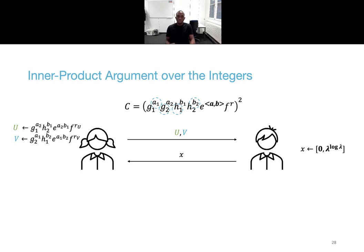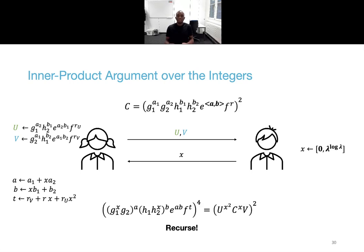The prover starts by committing to a first half of cross terms in u, and then she does the same for the other half in v, sends u and v to the verifier, and the verifier sends back a challenge x. The prover continues by computing an integer linear combination of a1 and a2, as well as for b1 and b2, and it is important to notice that the resulting combinations a and b are of half the size of the original vectors. Now the main observation is that by adjusting the randomness in the value t, one obtains an opening relation for a new commitment with basis and a commitment that depend on the original basis, the original commitment c and the challenge x. And importantly, the size of the new witness is now half the size of the original witness.